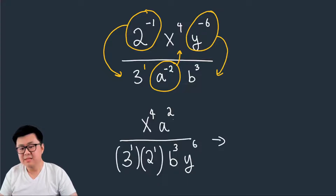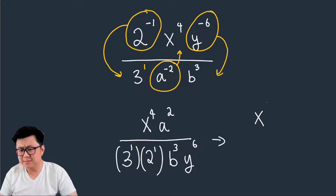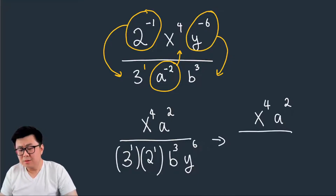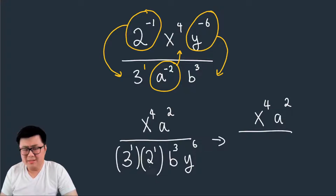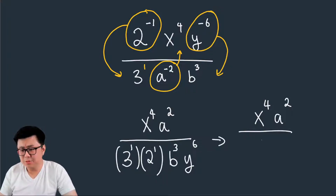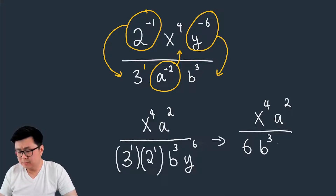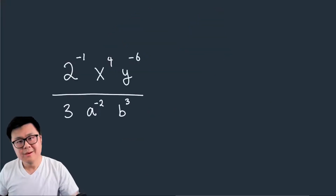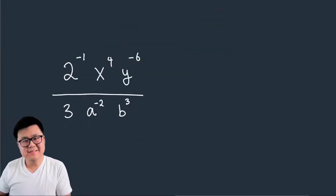To simplify: on top, x and a are different so we leave them as x to the 4 times a to the 2. On the bottom, 3 to the 1 is just 3, and 2 to the 1 is just 2, so 3 times 2 equals 6. The b to the 3 and y to the 6 stay as they are. Final answer: x to the 4 times a squared, over 6 b cubed y to the 6.